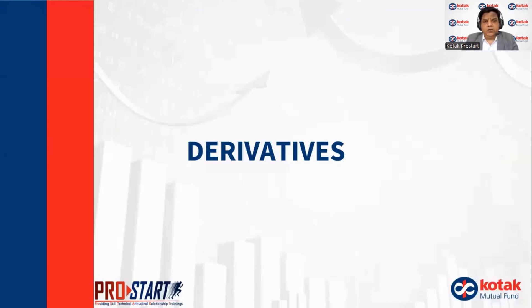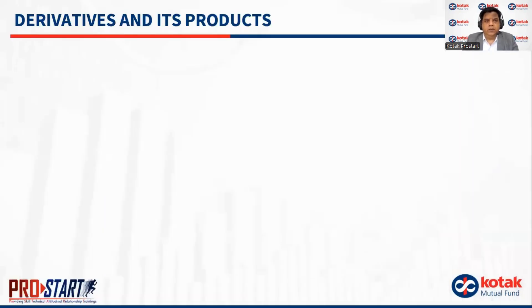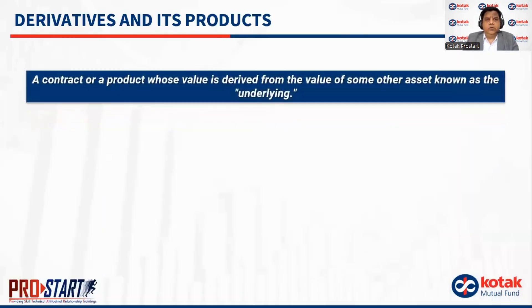Hello everyone, let us now look at derivatives as a concept. So, what is derivatives? It is a contract or a product whose value is derived from the value of some other asset known as the underlying. There could be multiple underlyings, and based on the movement in the price of the underlying, the value of the contract — which is in this case the derivative — also moves.